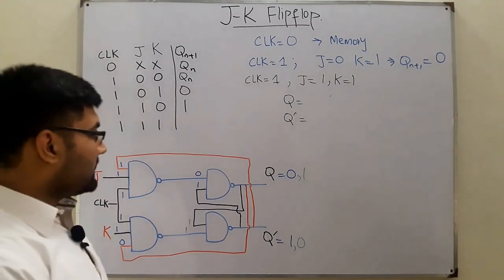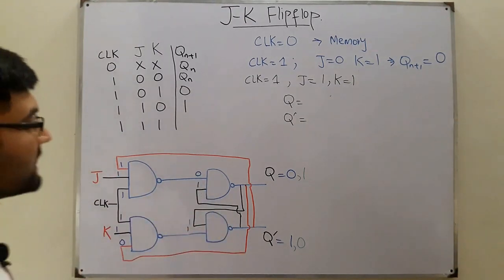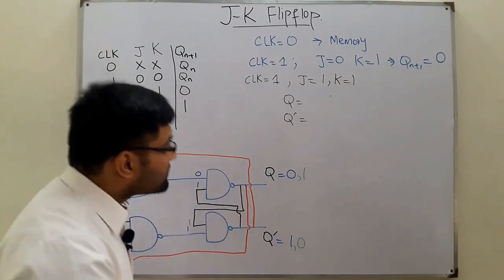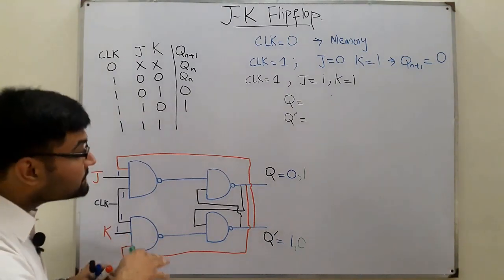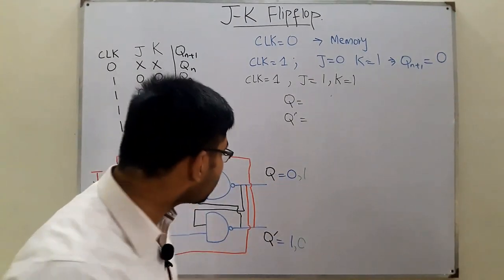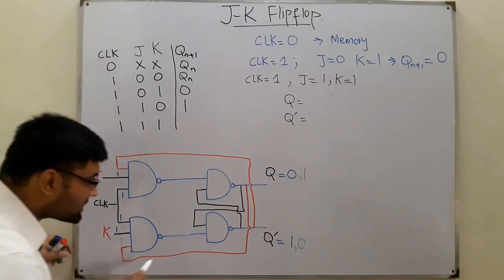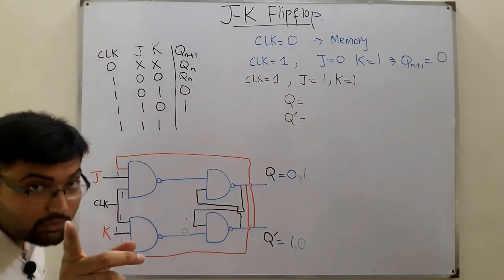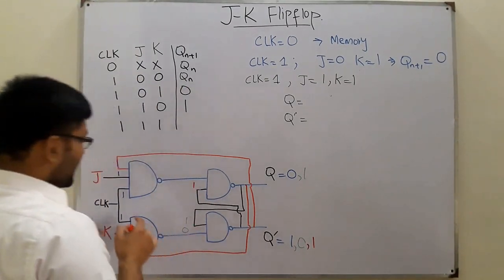This circuit keeps going until the clock is brought to the low state. Since the clock is still high, Q and Q-complement are fed back continuously. This one and zero are given as feedbacks again. One-one-one NAND gives zero; one-zero NAND gives one.